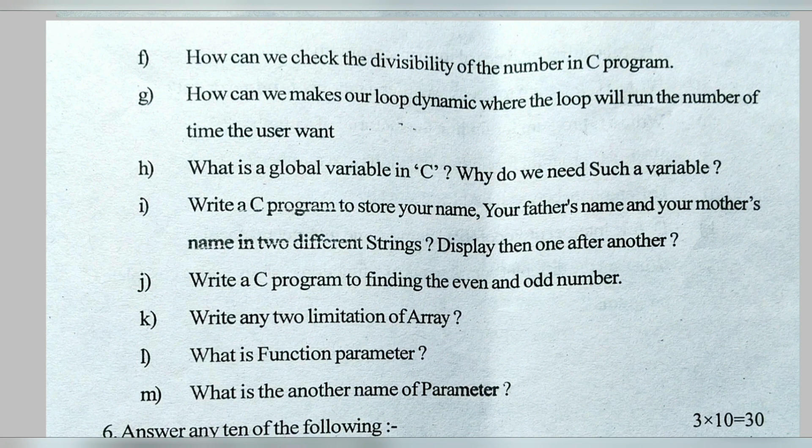What is a global variable in C and why do we need such a variable? A variable which is declared outside any function is known as a global variable. We need a global variable when it has to be accessed by multiple functions — in that situation we can use a global variable.